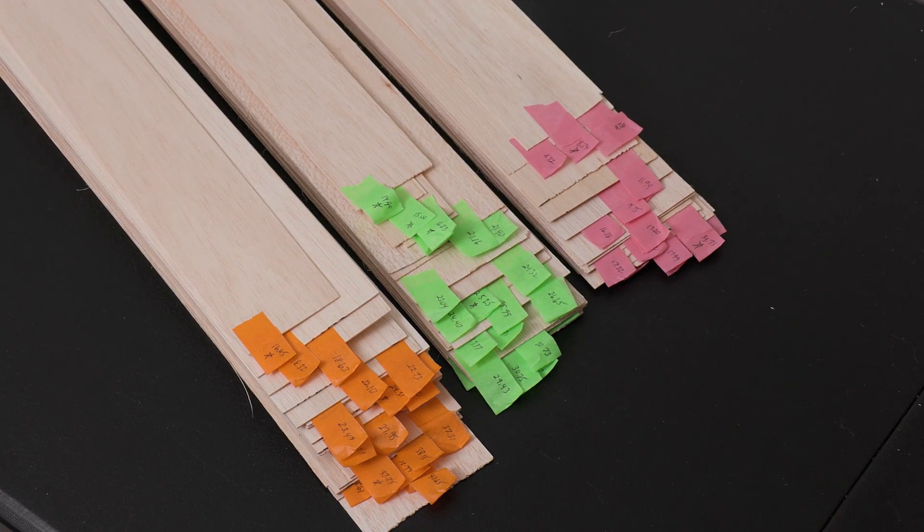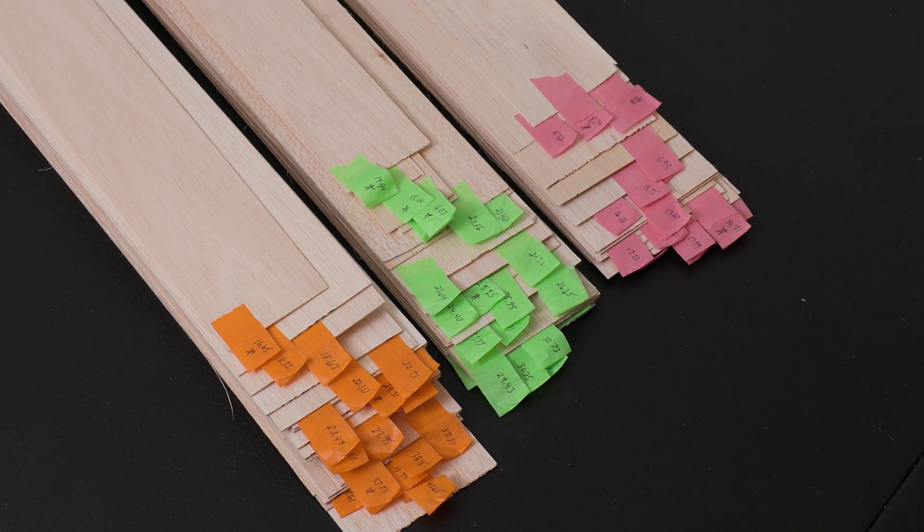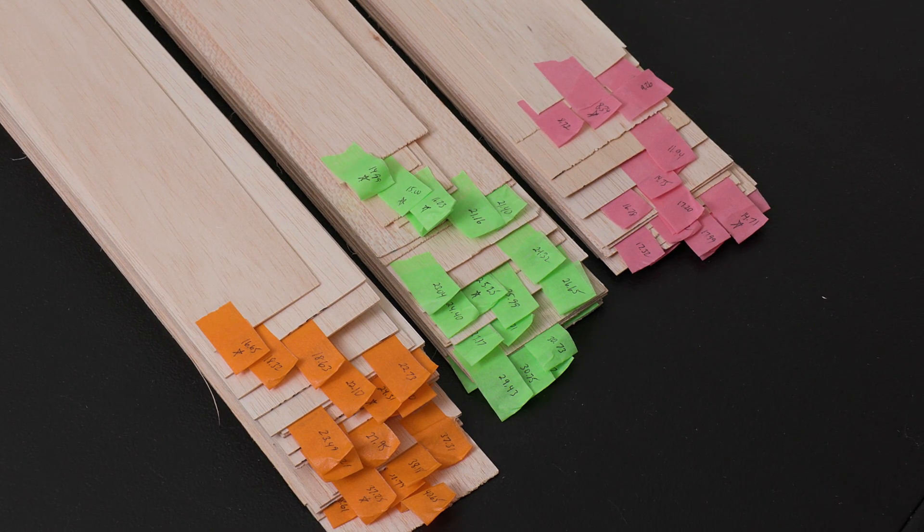While every design is different and has different requirements, in general, I can recommend having 1/32nd, 1/20th, and 1/16th of an inch thickness on hand for things like cross members.